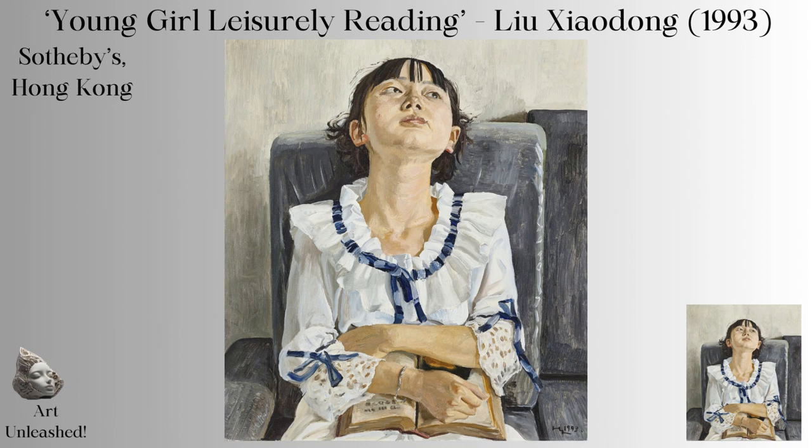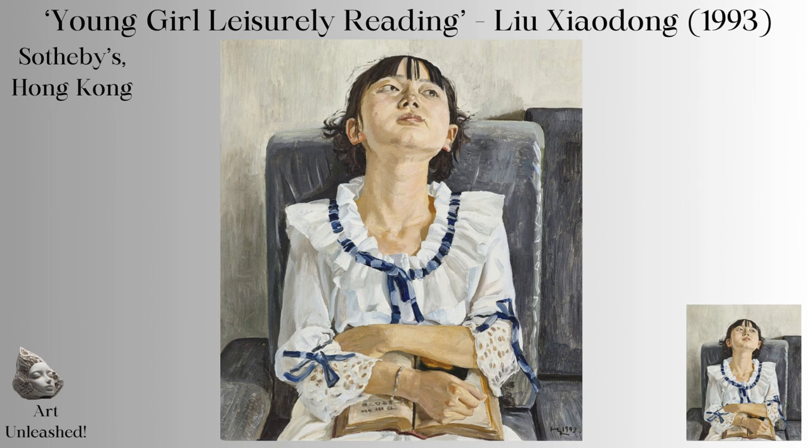Xiaorong's colour palette is muted, relying on earthy tones that give a sense of warmth and calm. The white of the girl's blouse and the blue of her collar and ribbon provide a subtle contrast, drawing attention to her without the use of vibrant colours. This choice of colour not only tells us about the aesthetic preferences of the era, but also speaks of the tranquillity and simplicity of the scene.